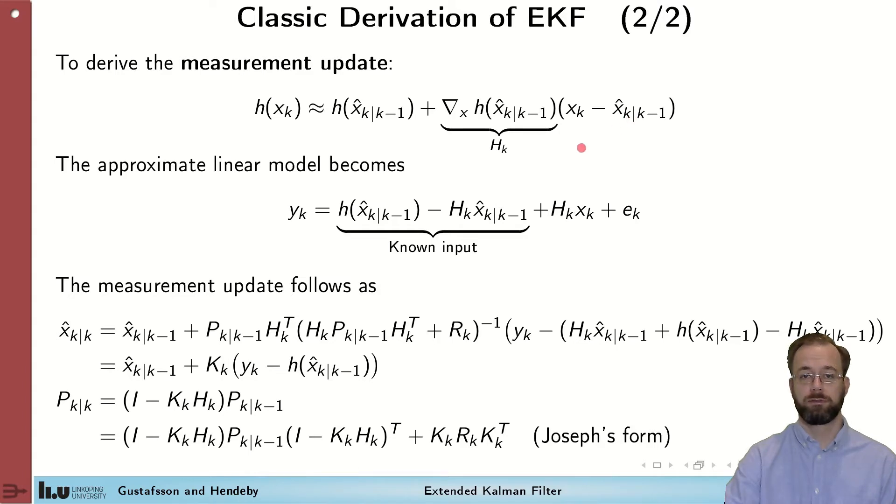Insert this into the measurement model, and after some rearrangement of terms, get this expression here, where the first part, again, is a constant that we can compute as soon as we know x hat k, k minus 1. And the linear part, which is H times x, plus measurement noise.